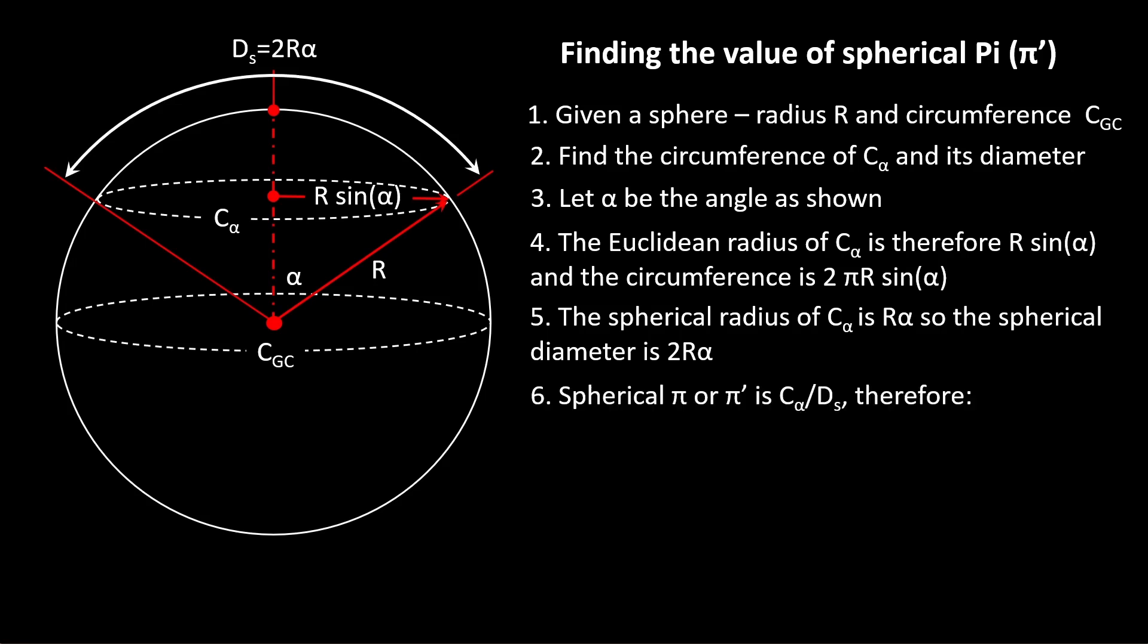So spherical pi, which we'll call π', is the circle circumference divided by the circle diameter: C_α divided by D_s. Spherical pi is 2πR sin(α) divided by 2Rα. Let's get rid of the 2s and Rs, and spherical pi equals π sin(α)/α. That's all there is to it.